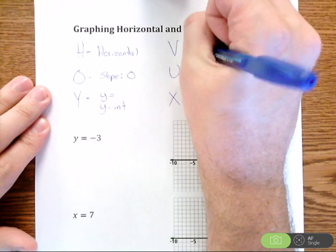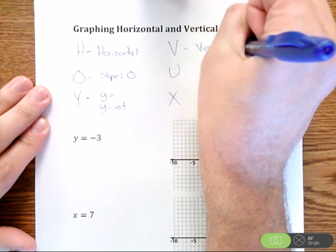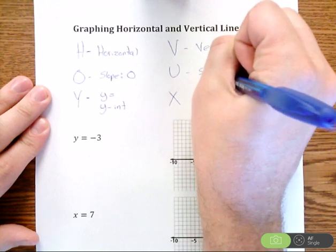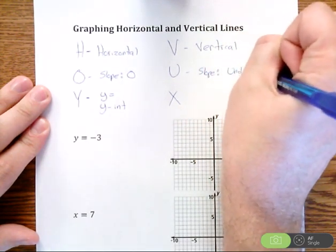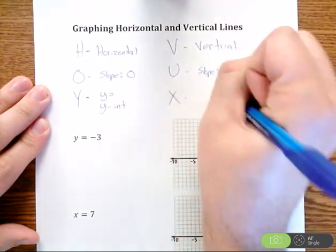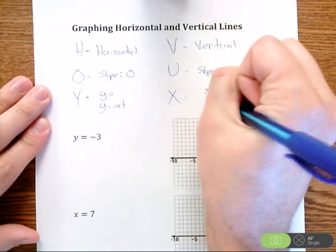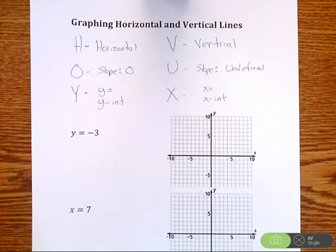For vux you can probably figure out some of these now. V is for vertical lines. The U means the slope is undefined. And the X stands for, you know, that's going to be an x equals equation. It's going to have an x-intercept. It's going to be on the x-axis.